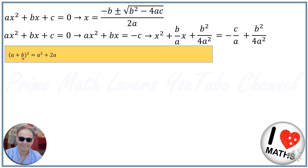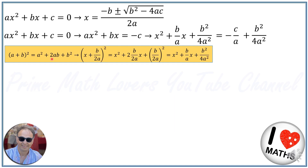Applying the identity (a + b)² = a² + 2ab + b², if I apply it to (x + b over 2a)², it expands as x squared plus 2 times x times b over 2a plus b over 2a squared, which gives x squared plus b over a times x plus b squared over 4a squared. So I can replace the left hand side with (x + b over 2a)².